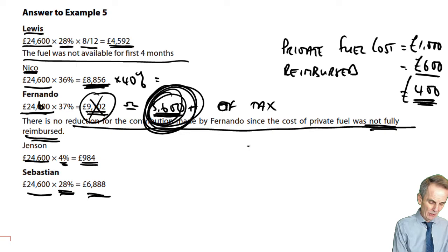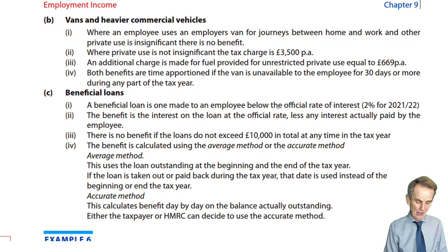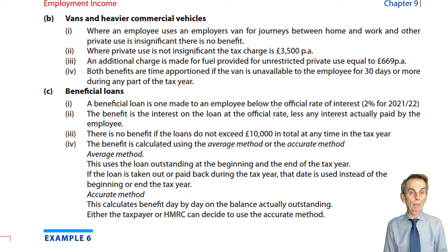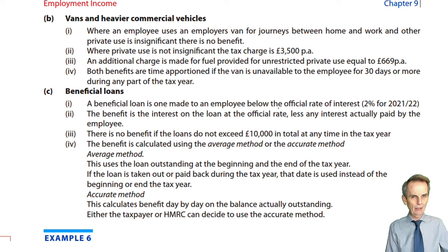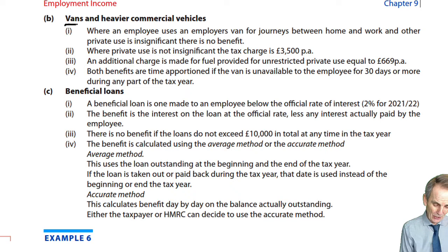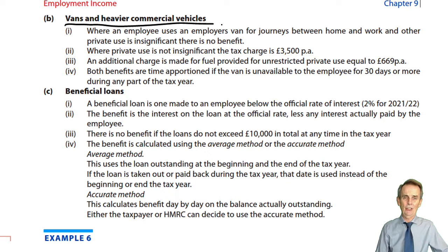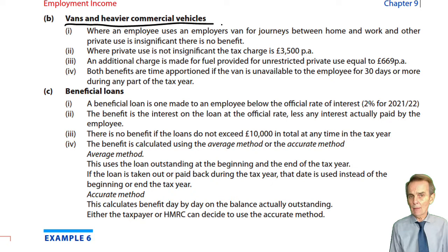If the employer is paying for any part of private fuel, those fuel benefit figures are included in the employment income assessment and taxed accordingly — at 40% for a higher rate taxpayer. Moving on to the last couple of assessable benefits: rather than a car, some employees have the use of a company van or heavier commercial vehicle.